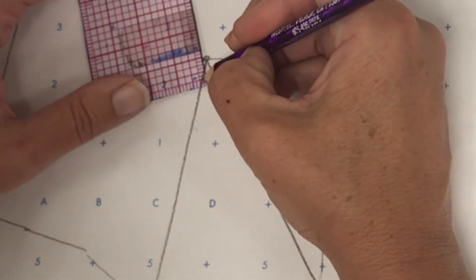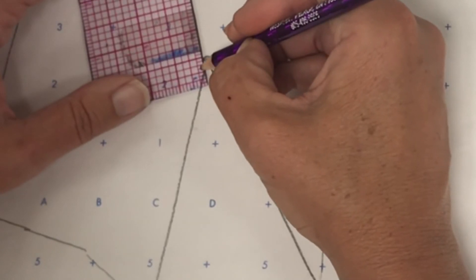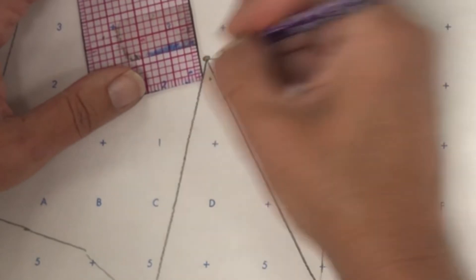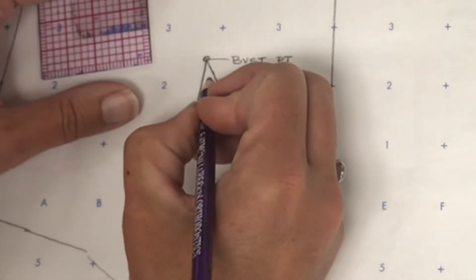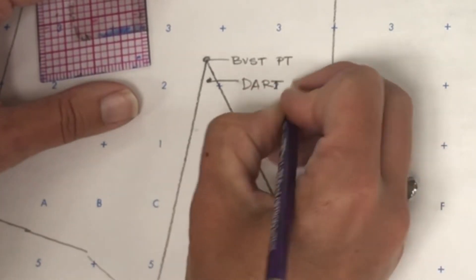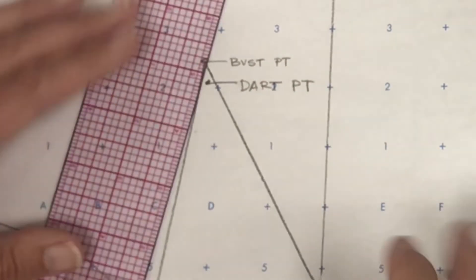1, 2, 3, 4, 5. 1, 2, 3, 4, 5. Okay. And this is our dart point. Now we can draw our dart legs.